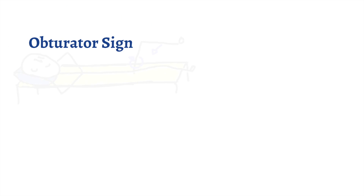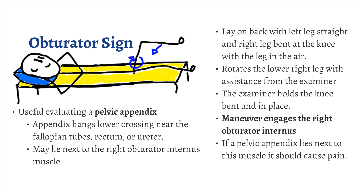The last sign is called the obturator sign, and it is useful in someone who has a pelvic appendix, where the appendix hangs lower, crossing near the fallopian tubes, rectum, or ureter. A pelvic appendix may lie next to the right obturator internus muscle, so the theory is very similar to the theory behind the psoas sign. The patient lays on their back and rotates the lower right leg with assistance from the examiner, while the examiner holds the knee bent and in place. This maneuver engages the right obturator internus, and theoretically, if a pelvic appendix lies next to this muscle, it should cause pain.